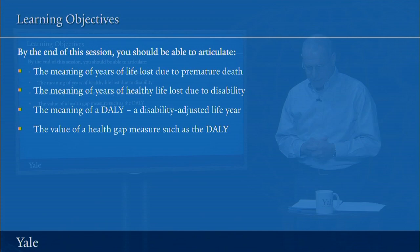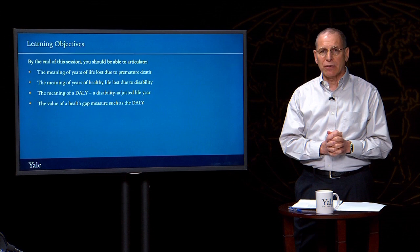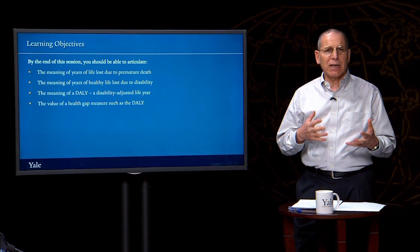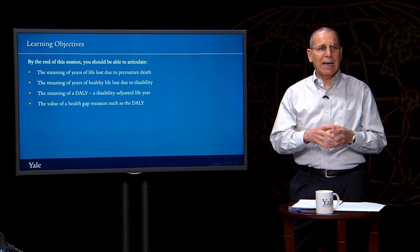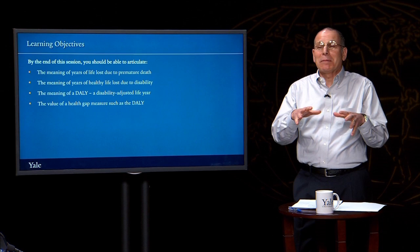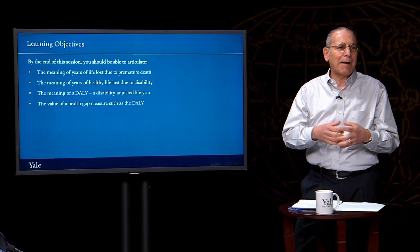Since the early 1990s, those working on global health have measured the health status of a population by using this concept of DALYs. The DALY is a composite measure that adds together years of life lost due to premature death and years of life lived with disability. It's easy to imagine — I hope it would be easier after this — why a health gap measure like a DALY can be so valuable, even if it's not perfect.